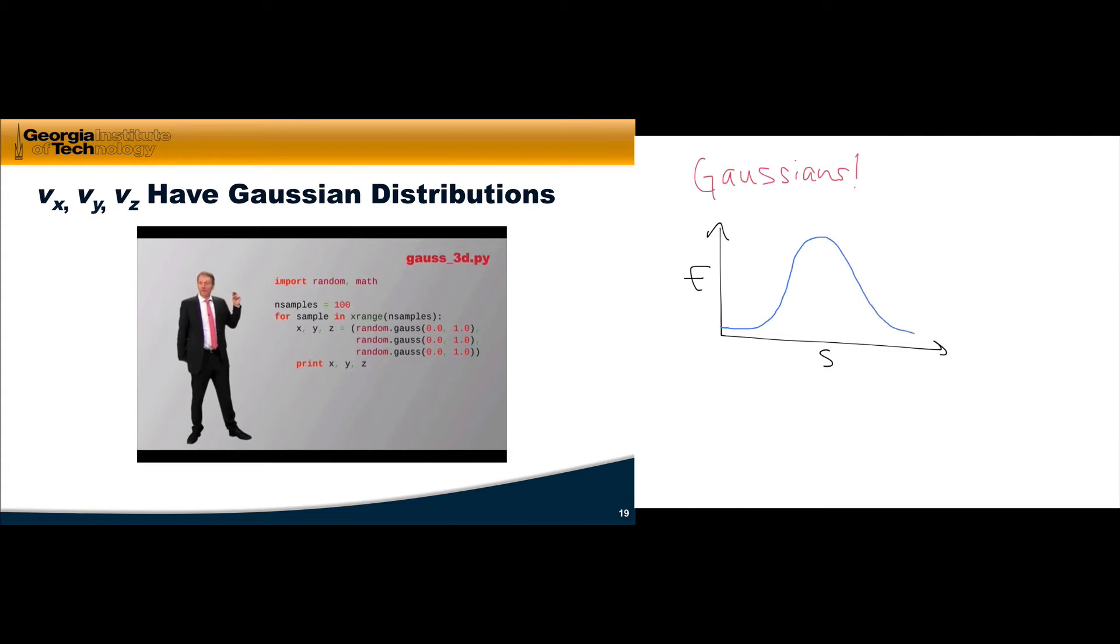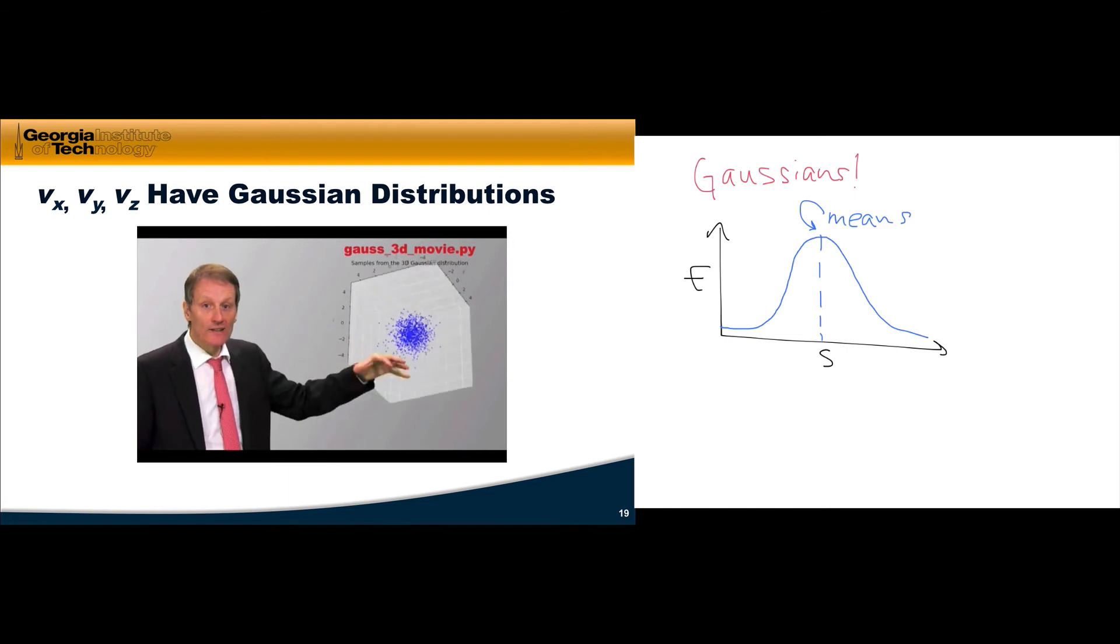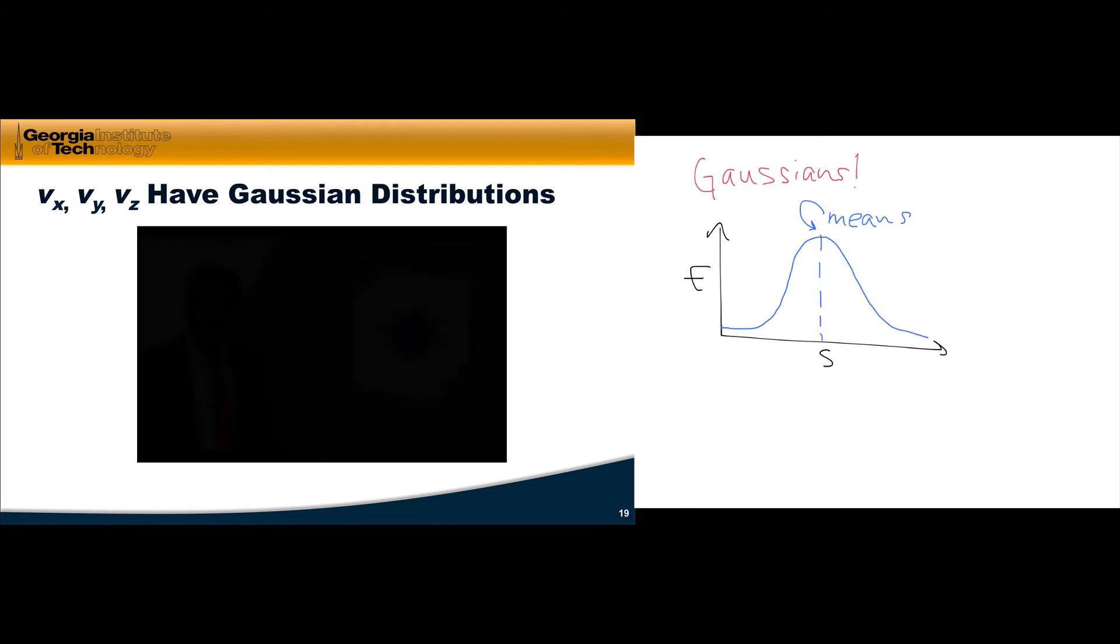So output of the movie version is shown here, one point, two point, three point, and so on, many points. You see that the distribution is isotropic. And in the movie version, we can even turn around the distribution and look at it from all angles.